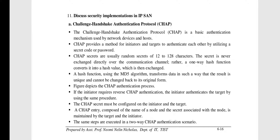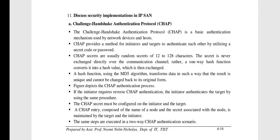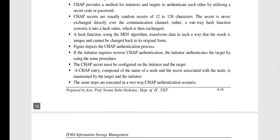Welcome to the fourth video of module six. In the previous video we discussed security implementations in NAS. This video talks about security implementations in IP SAN. For securing IP SAN, you have initially CHAP — that is Challenge Handshake Authentication Protocol. This is an authentication protocol used by network devices and hosts, and it uses random secrets of 12 to 128 characters with a hash function using the MD5 algorithm.